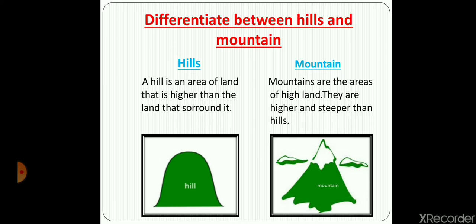A mountain is a part of earth that is very wide, has a taller height than a hill, and often has steep sides, or it is a large pile of something. A mountain is usually above 2000 feet or 600 meters.